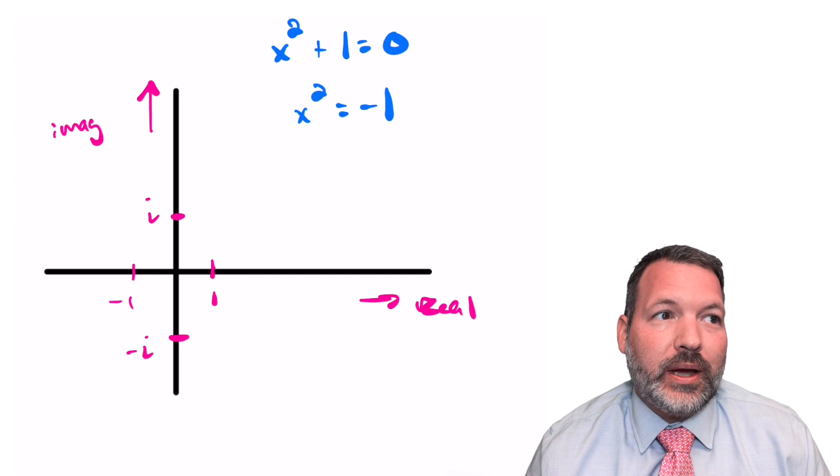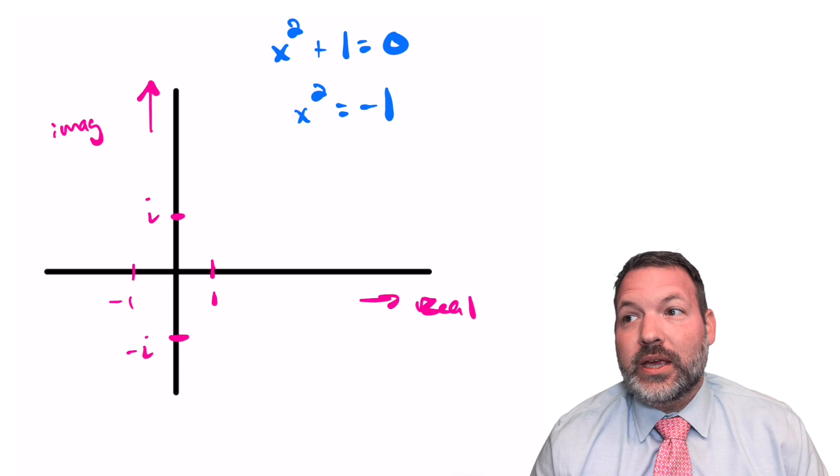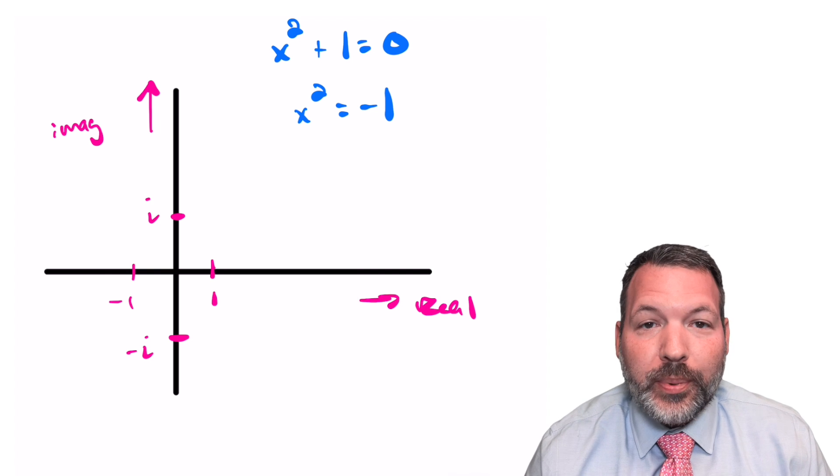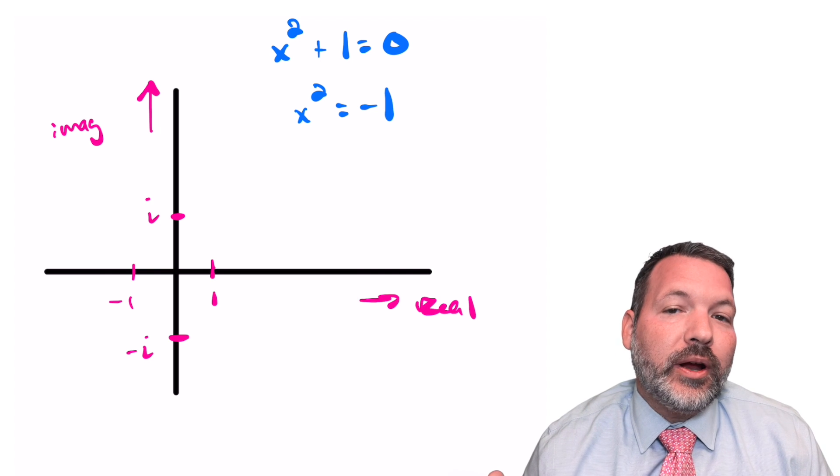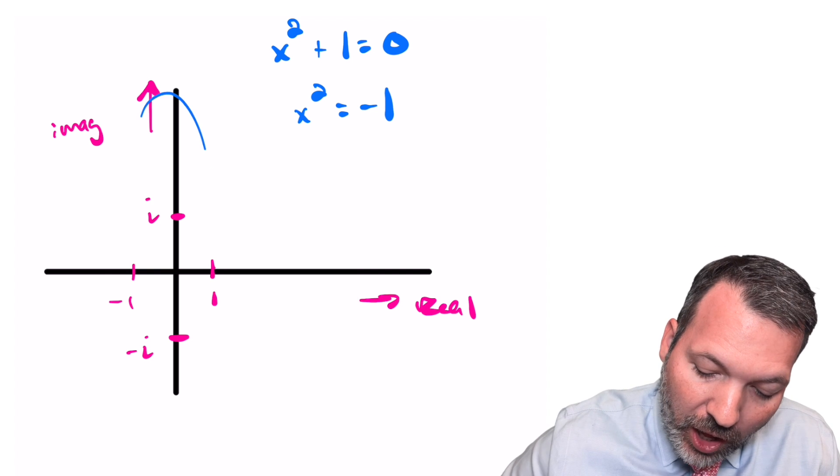When you square positive numbers, you get back more positive numbers. When you square negative numbers, you also get back more positive numbers. It's only when you square imaginary numbers, this other axis.